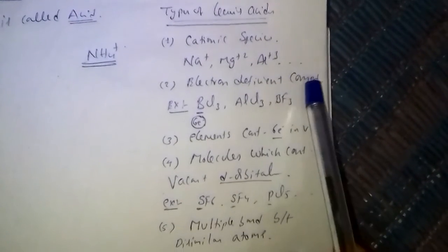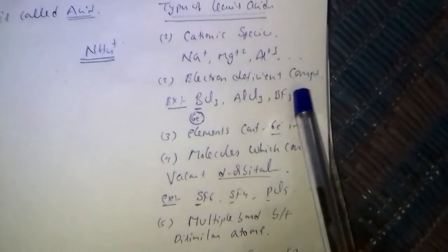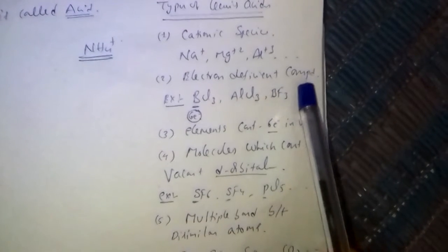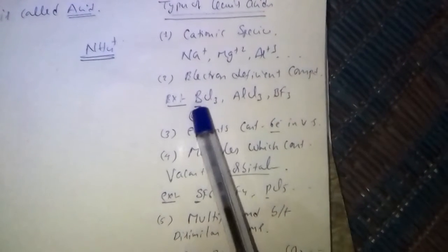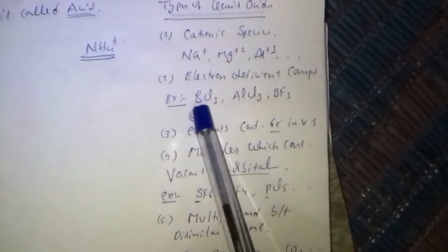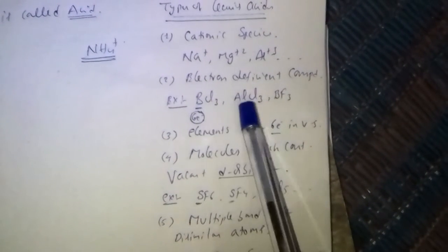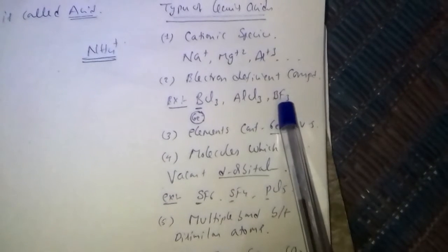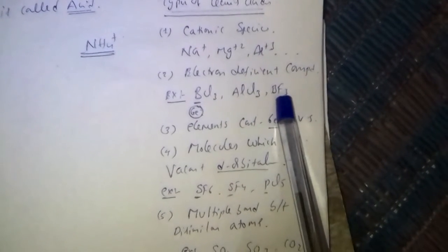Electron-deficient compounds contain an incomplete octet configuration on the central atom. For example, BCl3, AlCl3, and BF3. These act as Lewis acids.